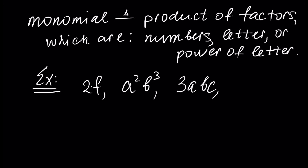Another example is minus 4, x squared, b cubed, and y to the power of 5. So here we have a number minus 4 and multiplication of letters: x to the power of 2, b to the power of 3, and y to the power of 5.